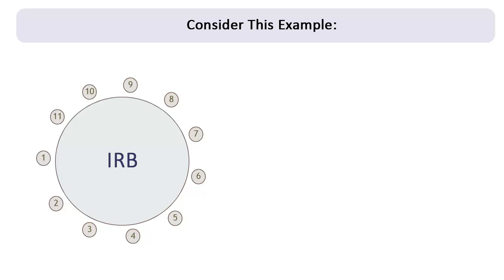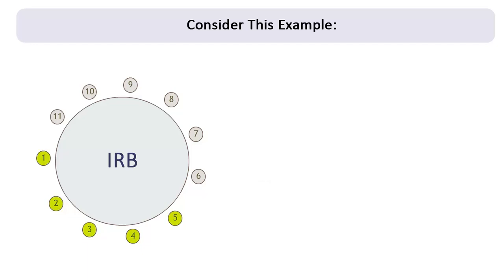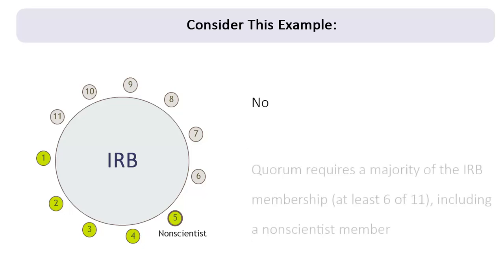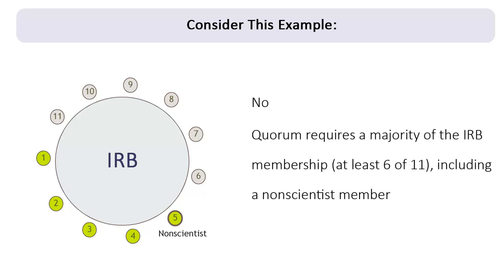Here is another example to consider. An IRB has a total of 11 primary members on its roster. At a convened IRB meeting, five primary members are in attendance, including a non-scientist member. Are the quorum requirements met for this IRB to proceed with the meeting? No. At least six of the 11 members—that is, more than half of 11—must be in attendance, including a non-scientist member, for the quorum requirements to be met.